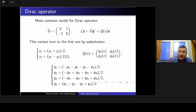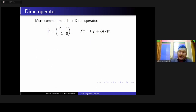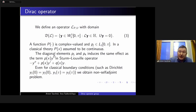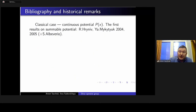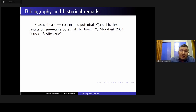I want to say about the substitution which eliminates the diagonal part. This is the second form of the Dirac operator with another matrix; we can turn one form to another. I want to say that the classical boundary conditions in this form look not as usual. For example, Dirichlet boundary conditions are the following — you can see them on the slide.